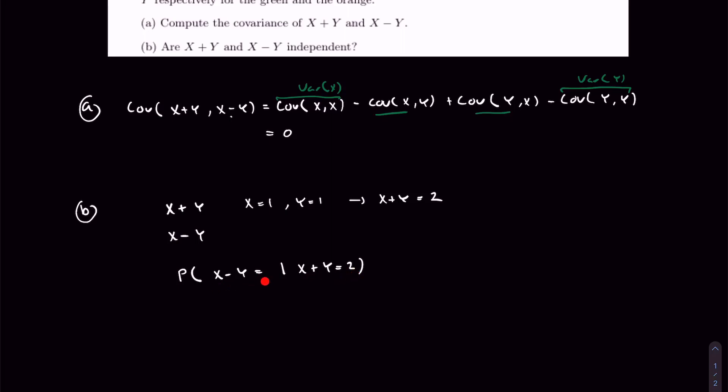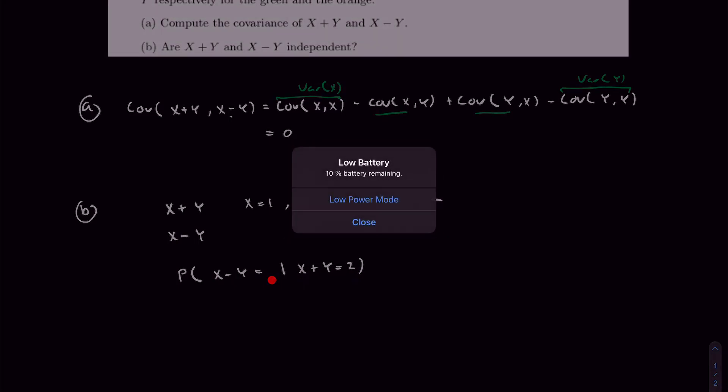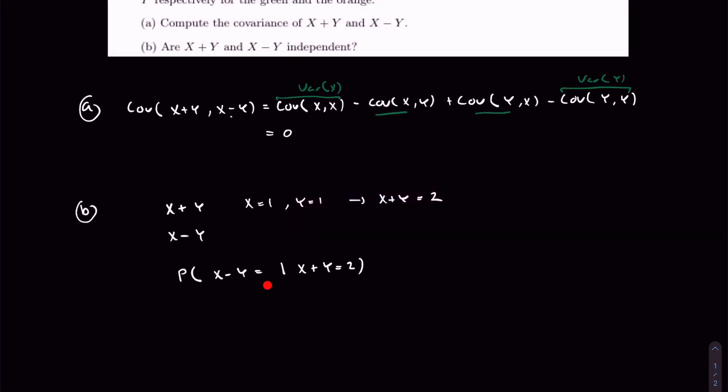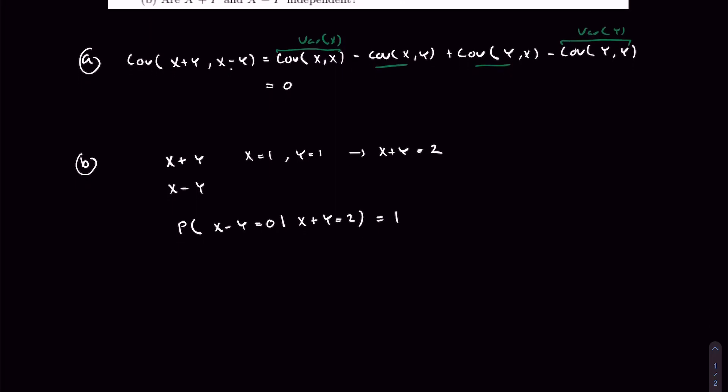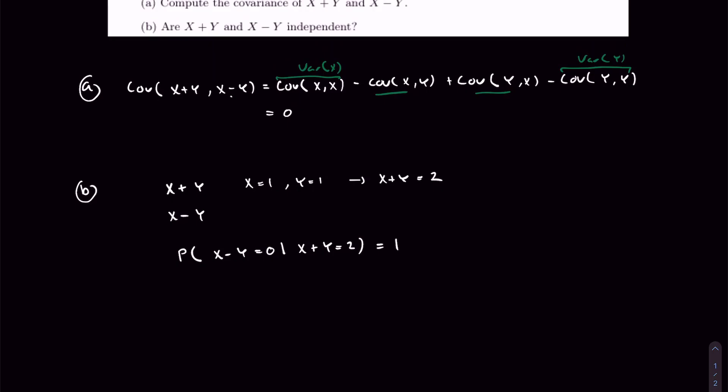Well, we can, because this has to be 0 with probability 1, because there's no other outcome that can yield this value. And so hence, X and Y are dependent.